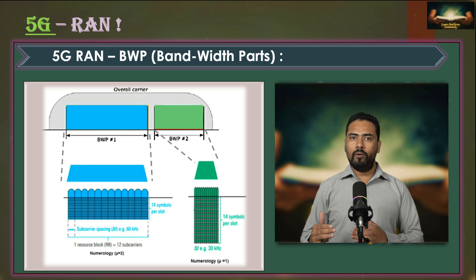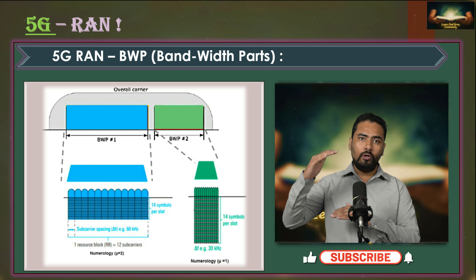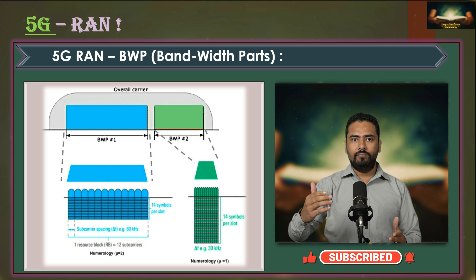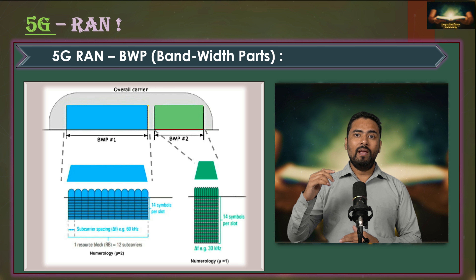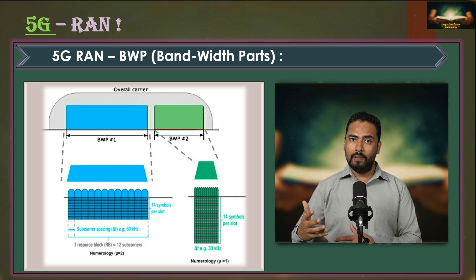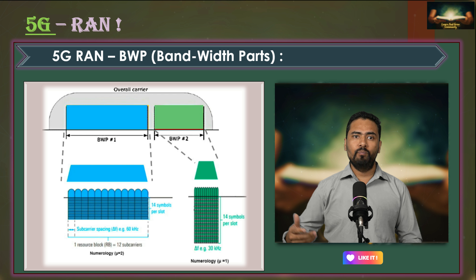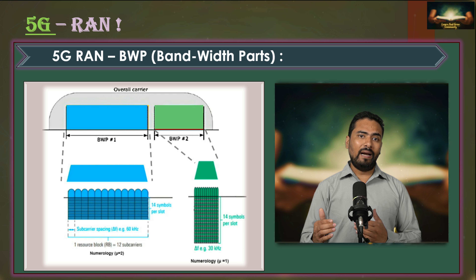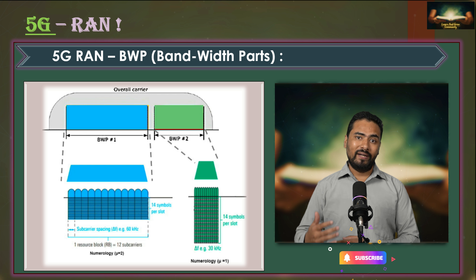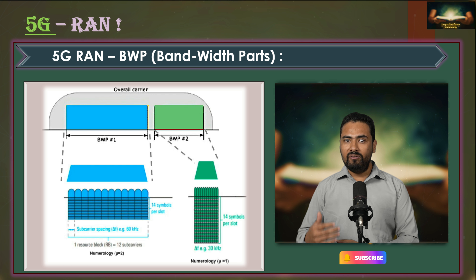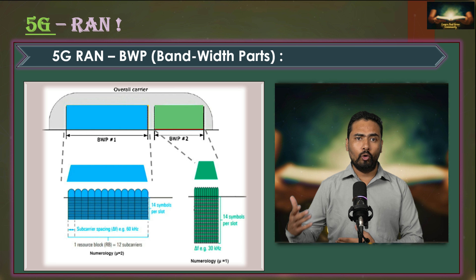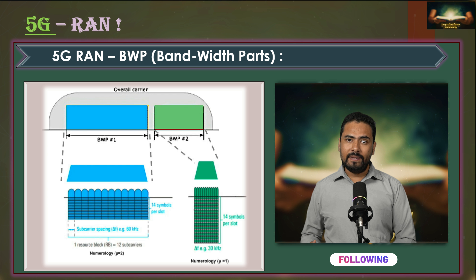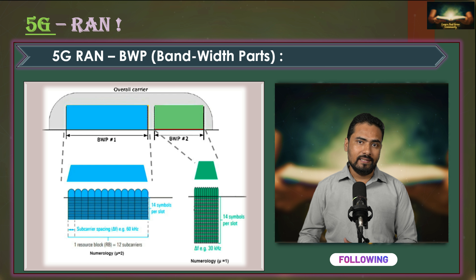A bandwidth part, or BWP, is a subset of contiguous resource blocks on a carrier. As shown in the picture, a single carrier can have multiple bandwidth parts such as BWP1 and BWP2 — a wider bandwidth part shown in blue and a narrower one in green. Importantly, each bandwidth part on a carrier can have different numerology, meaning they can differ in subcarrier spacing, symbol duration, and cyclic prefix lengths.